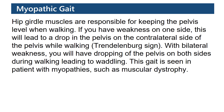Hip-girdle muscles are responsible for keeping the pelvis level when walking. If you have weakness on one side, this will lead to a drop in the pelvis on the contralateral side while walking, which is the Trendelenburg sign. With bilateral weakness, you will have dropping of the pelvis on both sides during walking, leading to waddling.